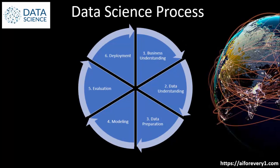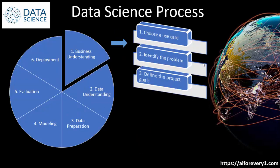If you consider any data science project, almost 95% of them will fall under six steps. Business understanding is nothing but identifying the project objective. It is divided into three levels: choose a use case, identify the problem, and define the project goals. Let's see with an example for better clarity.